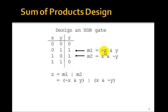We just put in the definitions of m1 and m2 now. z will be NOT x and y, that's this term, or x and NOT y. That's all there is to it. We can write basically by inspection here what z is in terms of x and y, in terms of a sum, that is an OR, of products, that is AND gates.